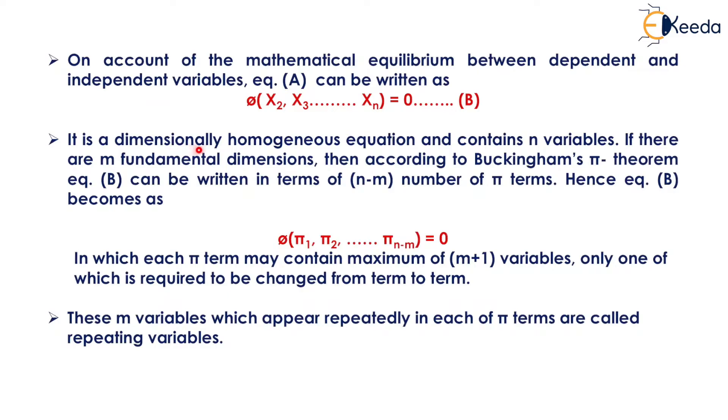It is a dimensionally homogeneous equation and contains n variables. If there are m fundamental dimensions, then according to Buckingham's Pi theorem, equation B can be written in terms of n minus m number of Pi terms.